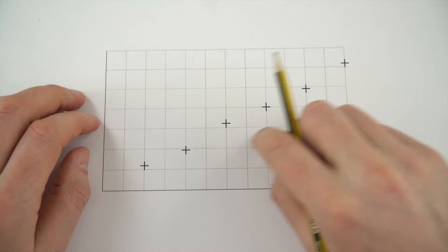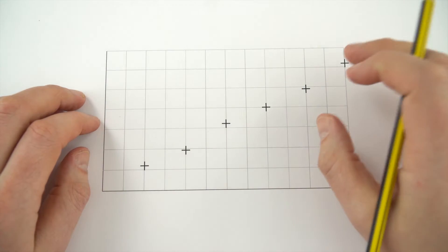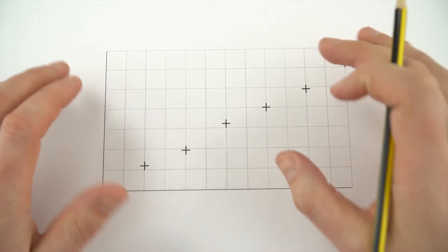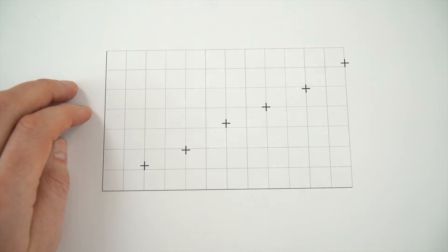Now a line of best fit is appropriate for lots of different graphs that you're going to be drawing in physics, and it allows you to show the trend in some data. So suppose we had some data here.